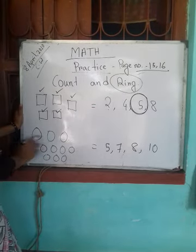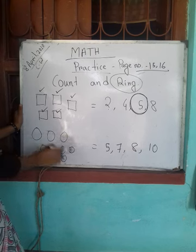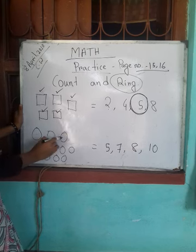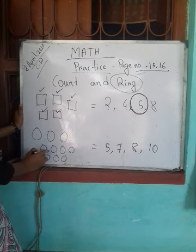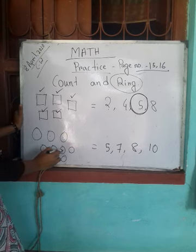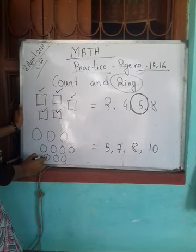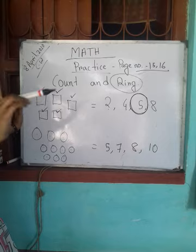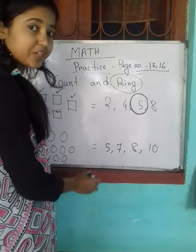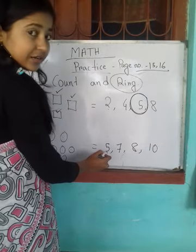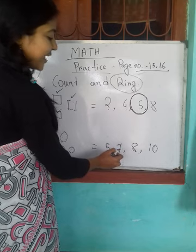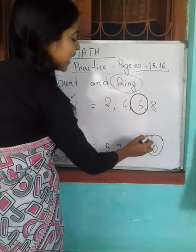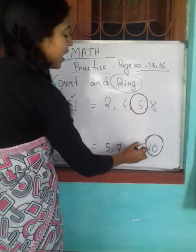Same way, count these pictures. How many circles are there? 1, 2, 3, 4, 5, 6, 7, 8, 9 and 10. How many? 10. Among these numbers, which one is 10? It's 5, 7, 8, 10. So this is our answer.